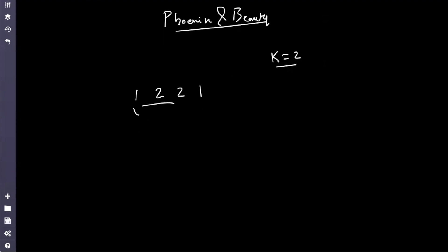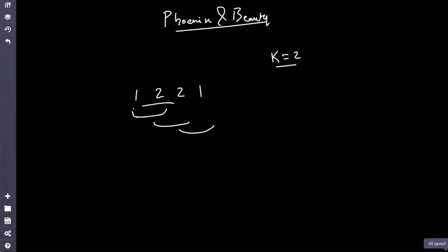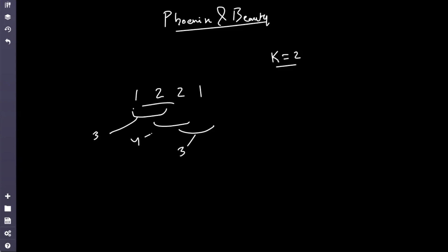For example, the subarrays of size k=2 in this array are these three windows. If you find the sums, they are 3, 4, and 3 respectively. So we can see that not all subarray sums of size k are the same.